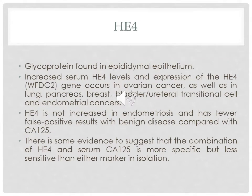Another tumor marker, human epidermal protein 4 (HE4), is still under research, but trials have found it is more sensitive and more specific than CA125, because it is not raised in endometriosis and is mainly raised in ovarian cancer as well as other cancers including lung, pancreas, breast, bladder, and endometrial cancer. There is some evidence that the combination of HE4 and CA125 is more specific but less sensitive than either marker in isolation, but it is still under trial and not for use in routine clinical practice.